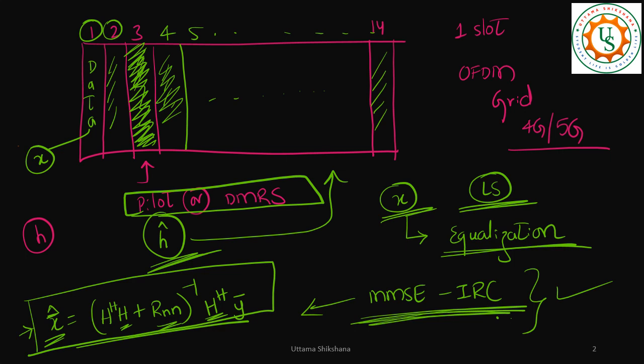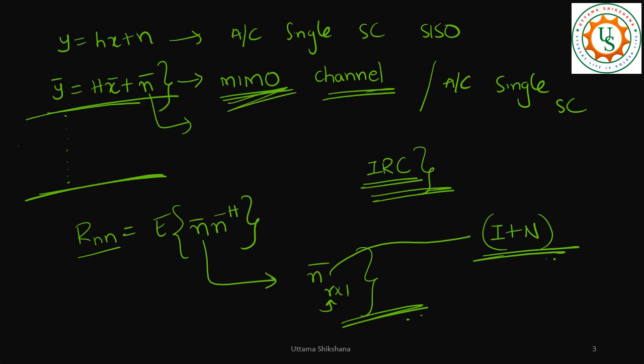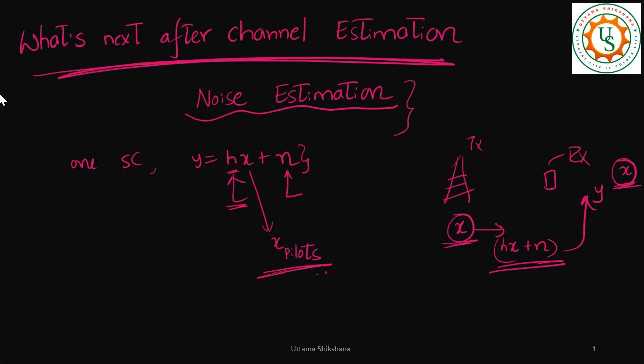In the upcoming video let's talk about MIMO channel estimation, that is one thing, and we'll talk about moving average which is more relevant to use under high speed scenario. And we'll talk about what are the further estimations which we need to do. Here we have seen noise estimation, is there any other estimation that is required and what is the purpose of that estimation? Thank you very much. If you're looking for more videos please do subscribe to the channel. Have a great day, bye bye.